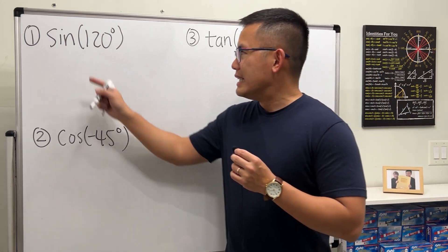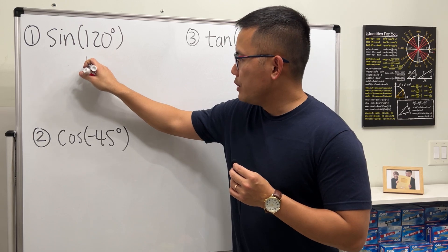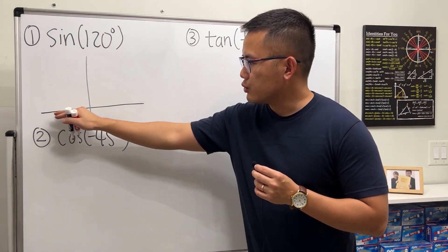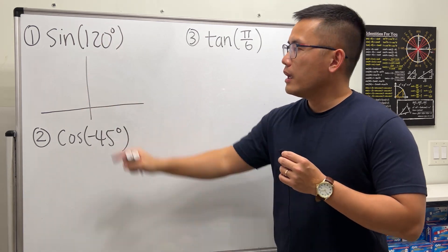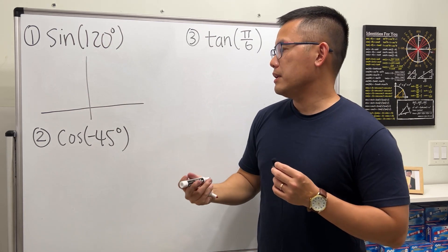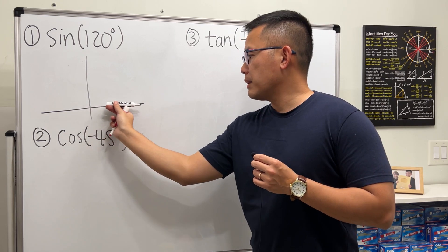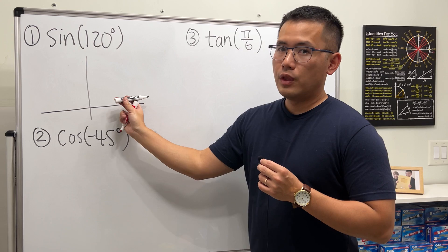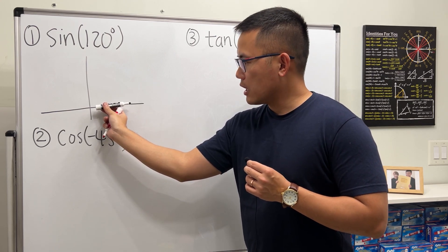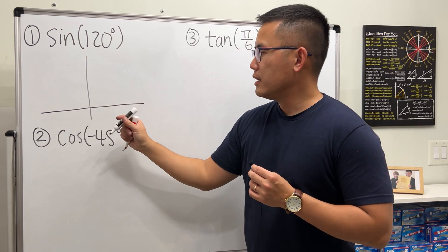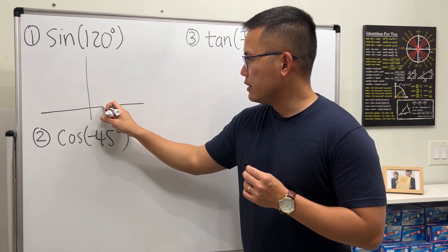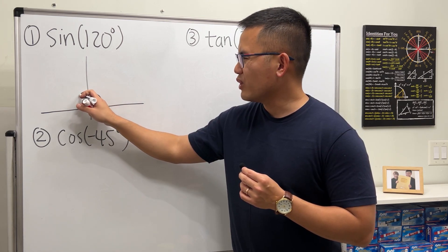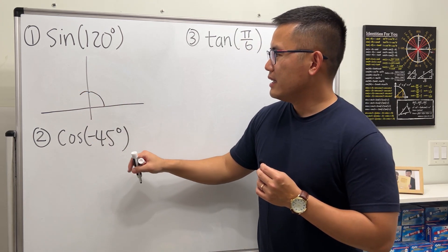Number one: sine of 120 degrees. I will be using the reference triangle method. Let's draw the x and y axis. 120 degrees is positive, so we start by looking at the positive x-axis and rotate in a counterclockwise fashion. We rotate 120 degrees — this is 90 degrees already, so we go 30 more.